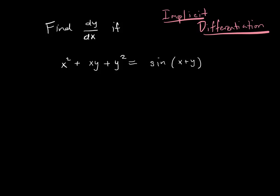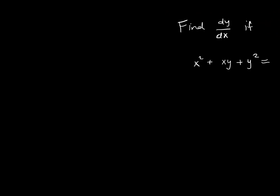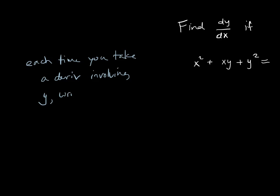I'll say the general idea, but the best way to understand it is to watch what I do afterwards by example. The general idea is to take derivatives of both sides, and every time you encounter an expression with a y in it and you take its derivative, you write dy/dx — or more precisely, multiply by dy/dx. We're just thinking this; it's obviously not a formal mathematical justification, but it's what's going through our minds every time we do it.